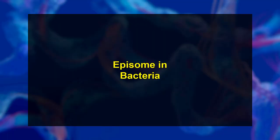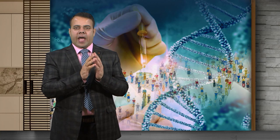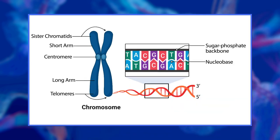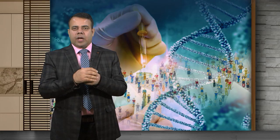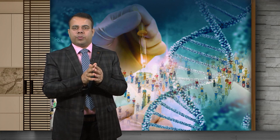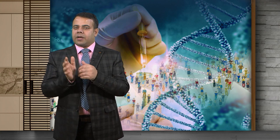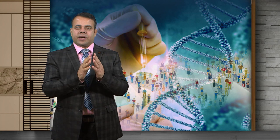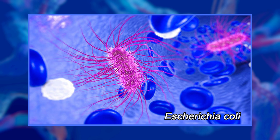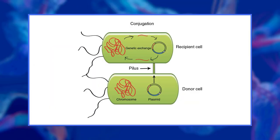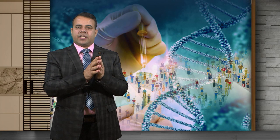Let's now discuss episomes in bacteria. Some hereditary particles have been found to exist in two states: either in an autonomous state in the cytoplasm where they replicate independently of the chromosomes, or in an integrated state incorporated into the chromosomes. Particles with such properties are known as episomes and include things such as the sex factor. Episomes are not essential to the life of the bacteria; if absent, they can be acquired only from an external source. Male bacterial cells — the donor — have the sex factor, which is responsible for the transfer of DNA from male to female bacterial cells — the recipient. This sex factor is a cytoplasmic particle.